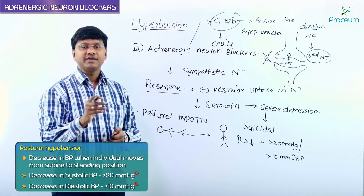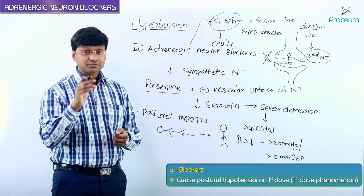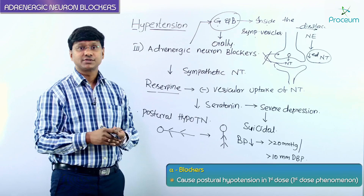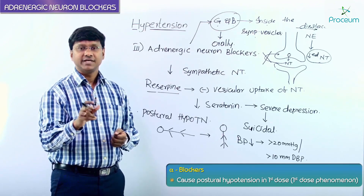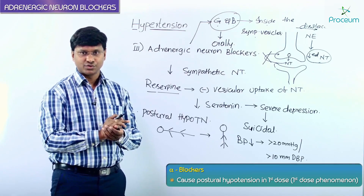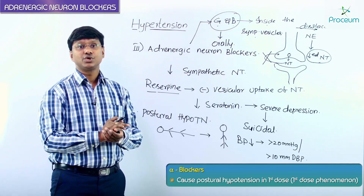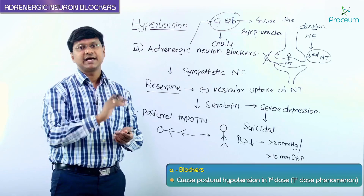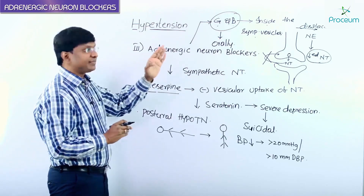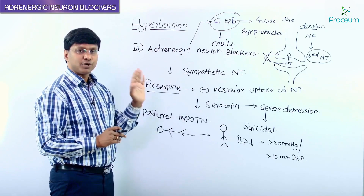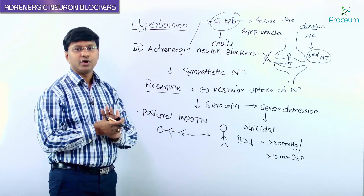We have another group of drugs called alpha blockers. Alpha blockers cause postural hypotension with the very first dose itself — this is called the first dose phenomenon caused by alpha blockers. Whereas guanethidine and bretylium cause postural hypotension only on prolonged use.